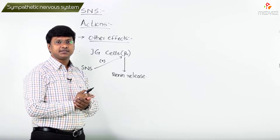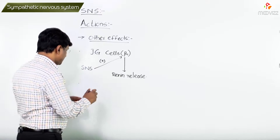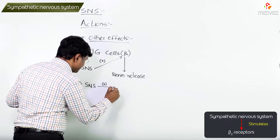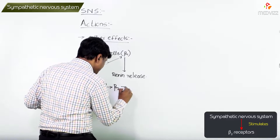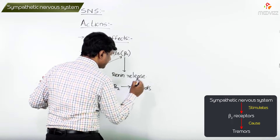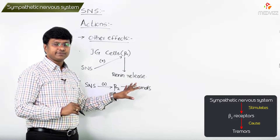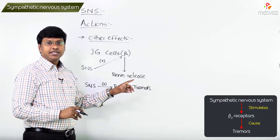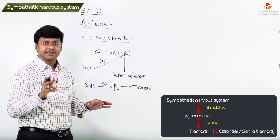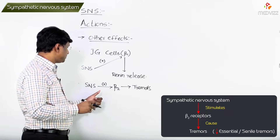The other thing is in the central nervous system. Whenever the sympathetic nervous system stimulates the beta-2 receptors, that will result in tremors. To reduce the tremors of individuals — for example, essential tremors or senile tremors — these will be reduced whenever you give beta blockers.